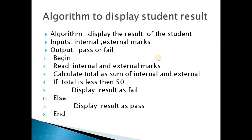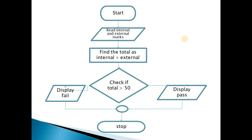The output is pass or fail. To begin, we need to read the internal and external marks and calculate the total as the sum of internal and external marks. We then verify whether the total is less than 50. If the total is less than 50, we display the result as fail; otherwise, we display the result as pass. Let us also draw the flowchart to determine whether the student passes or fails.